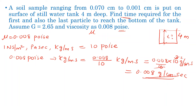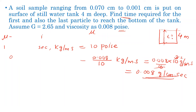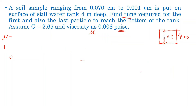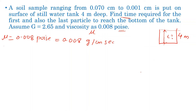We will now convert the poise value to SI units for use in the velocity equation.